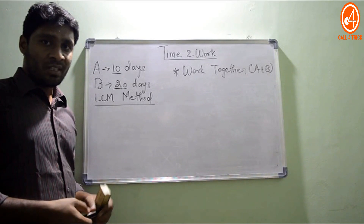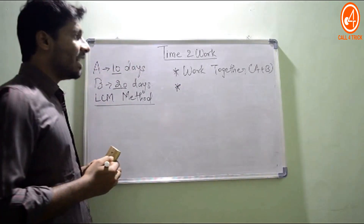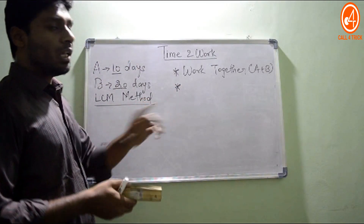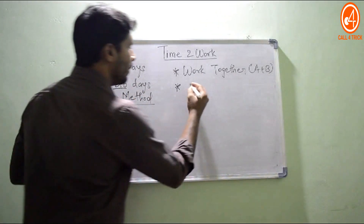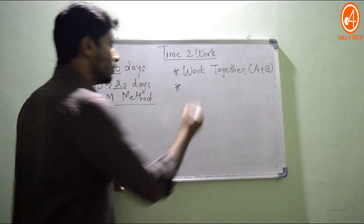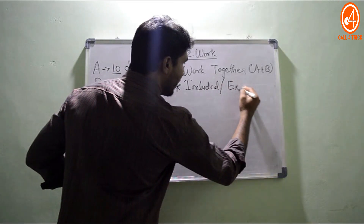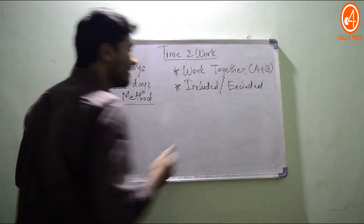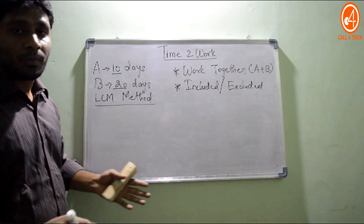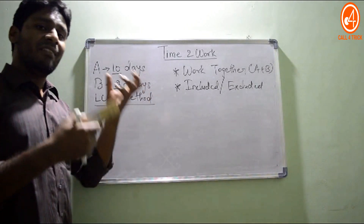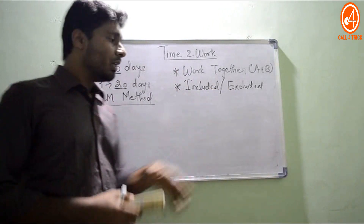Now we go for the second part of the question — the second section coming into this topic of Time and Work. We already solved 'A plus B working together' in the previous session. The second section is when a person leaves or joins the job, which is simply any one of the persons getting included or excluded. This concept covers all such questions.